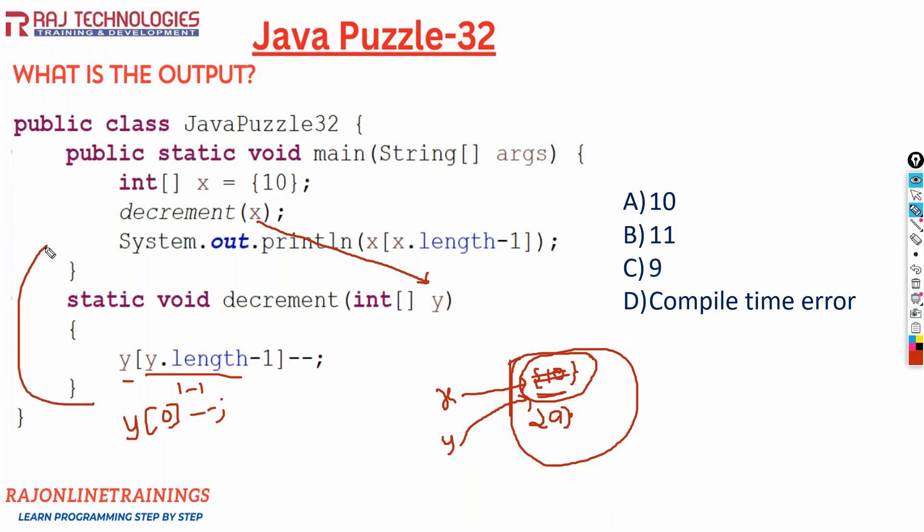Now once we come back to this statement, System.out.println x of x dot length. What is x dot length? It's 1. One element we are having, so 1 minus 1 becomes 0. We are printing the element x of 0. So what is the value present in x of 0 now? It is now 9. So the correct output of this program is 9.